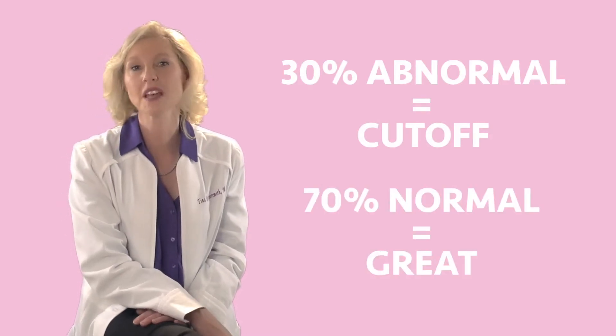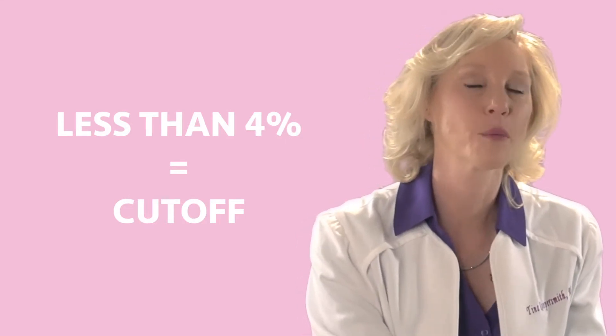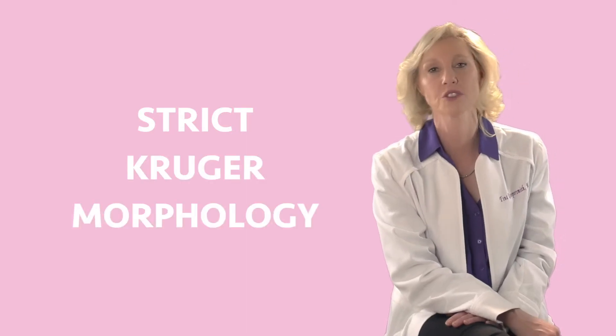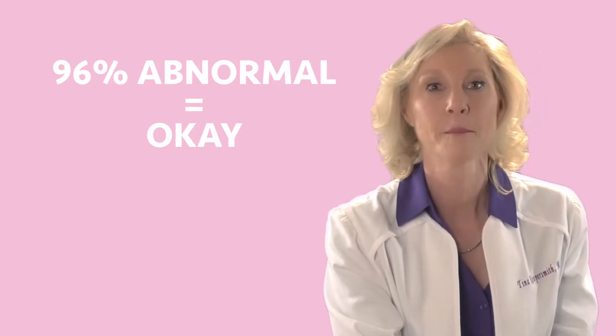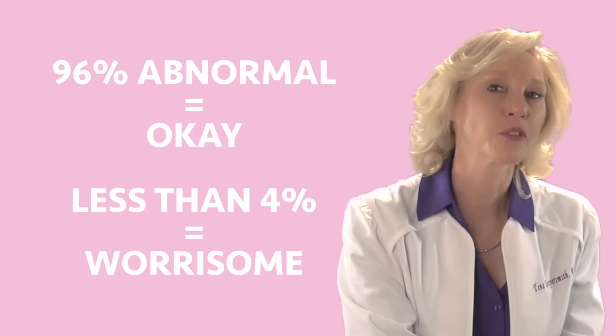For years, the World Health Organization told us that 30% abnormal was our cutoff and 70% normal was great. One researcher in an IVF lab decided to correlate his semen analysis with IVF outcome. He was very strict on what he'd call a normal sperm — anything less than 4% normal was his cutoff for very abnormal. He found that if sperm were less than 4% normal, there was an increased odds that the sperm would not fertilize an egg, even in the IVF lab. Since his publication, more and more laboratories and even the WHO have adopted his strict Kruger morphology as the reference. So now, 96% abnormal sperm forms is actually okay, but less than 4% normal forms is worrisome for failed fertilization.